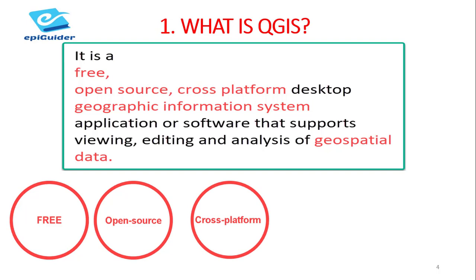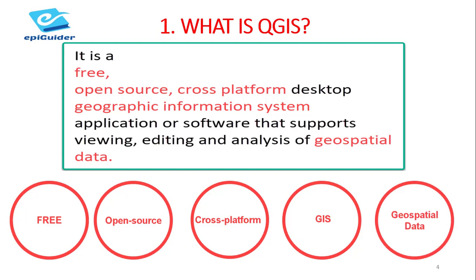By a cross-platform software, I mean the software is implemented on multiple computing platforms. A geographic information system, or GIS, is a conceptualized framework that provides the ability to capture and analyze spatial and geographical data. Geospatial data is data about objects, events, or phenomena that have a location on the surface of the Earth. The location may be static in the short term, like in the case of a road, or dynamic, like in the case of the spread of an infectious disease.